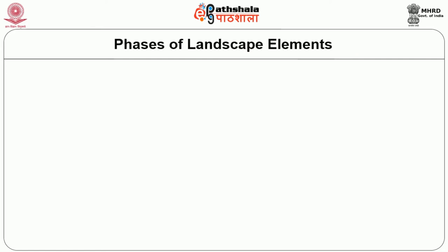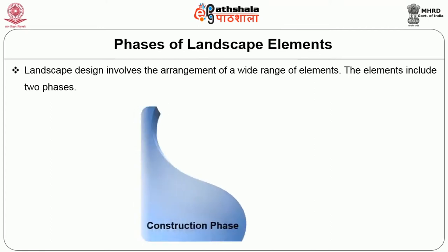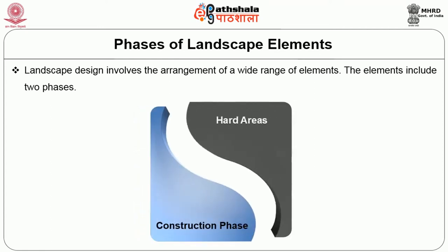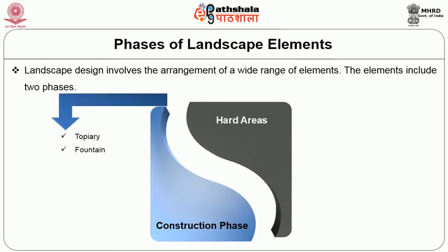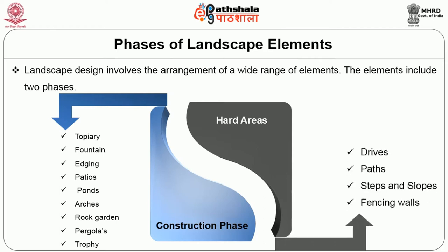The elements of landscape designing are divided into two phases. The first is construction space and the second is hard space. The construction space contains topiary, fountain, edging, patios, ponds, arches, rock garden, pergolas and trophy. The second, hard space, includes drives, paths, steps and slopes, and fencing walls.